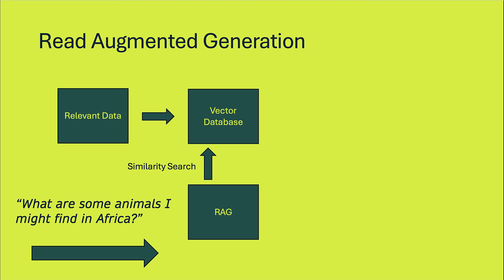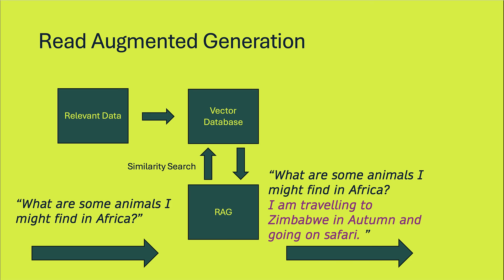And so in this example, I'm going to give my travel plans and I'm going to put all of my travel plans and bookings and stuff into a vector database. So it can do a similarity search and say, oh, he's looking at things in Africa. And a read augmented generation will append some contextual and important information to my prompt before giving it to the AI.